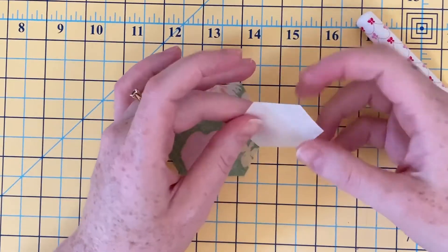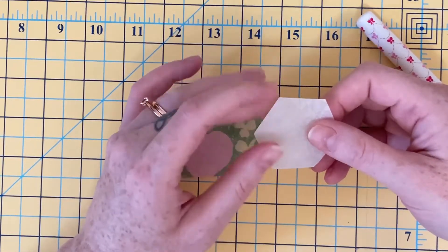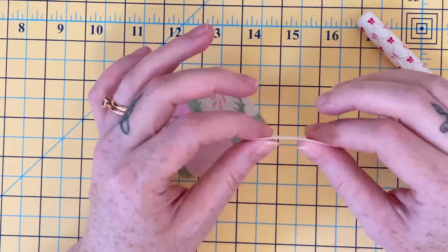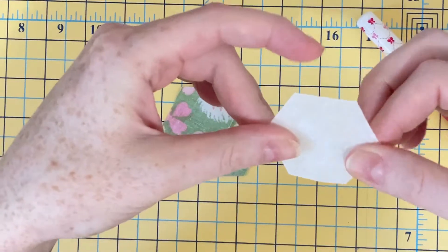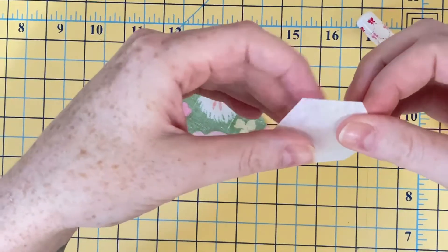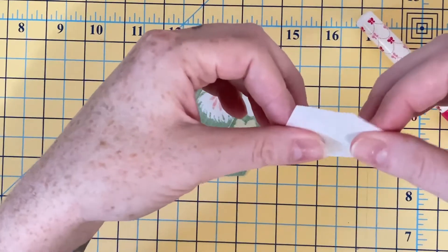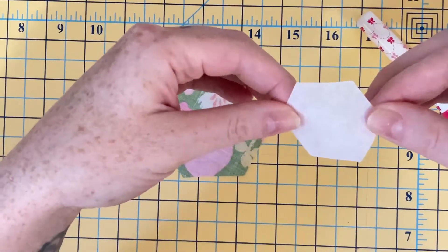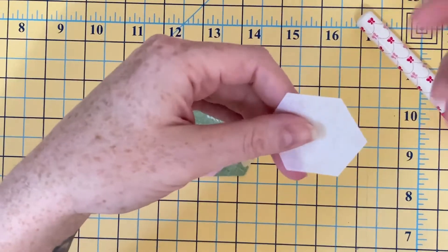I prefer to use an embroidery stabilizer. This one is medium weight. It almost feels like a stiff dryer sheet. Now the reason why I enjoy using these over paper is because I don't actually need to take these out after like you would paper.